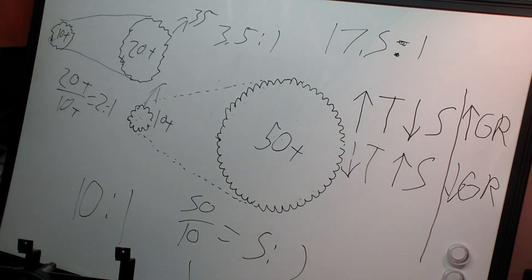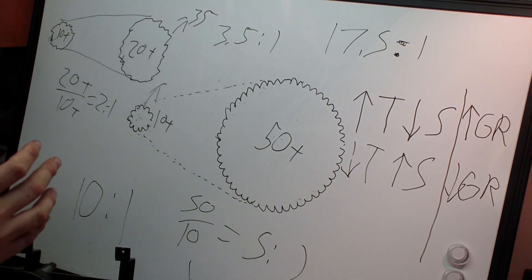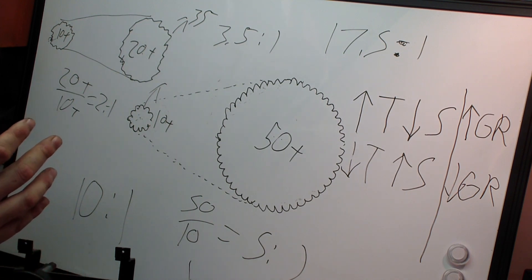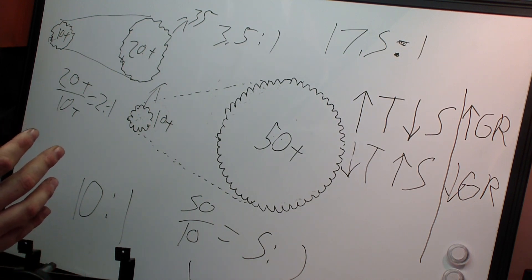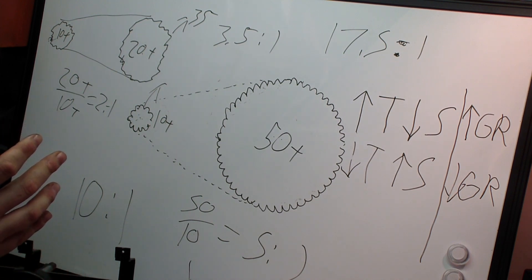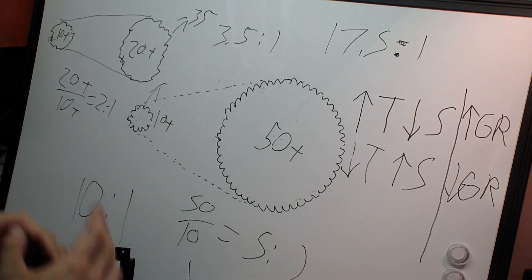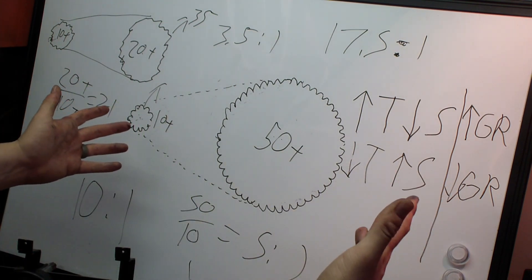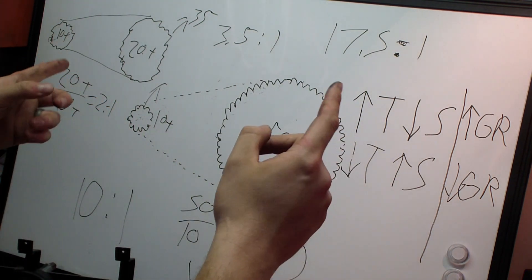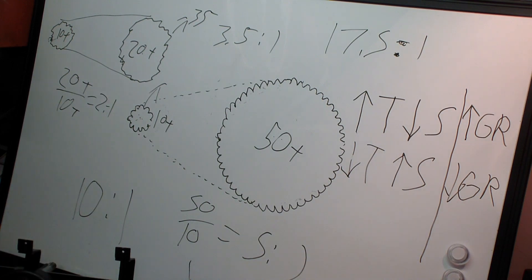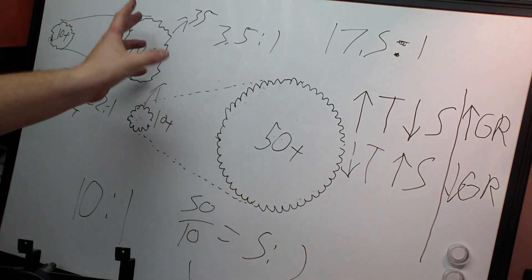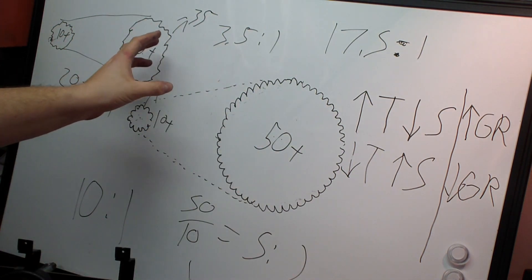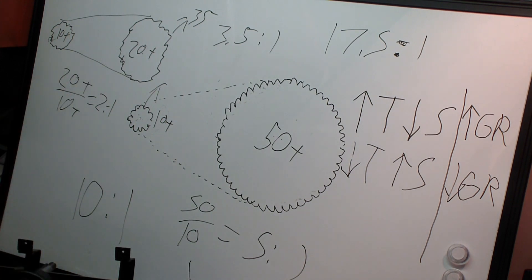The same logic applies to every gear in the system. Making an output gear bigger increases torque and decreases speed; making it smaller decreases torque and increases speed. Now let's do some equations — I'll do a lot of math, and then at the very end I'll show you the simple equations so you don't have to remember all of it.